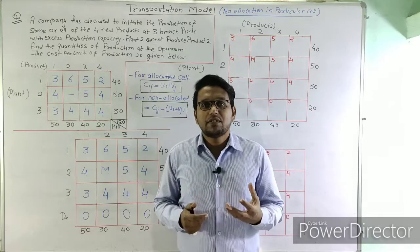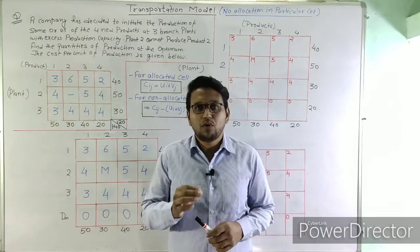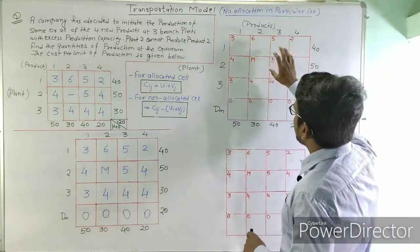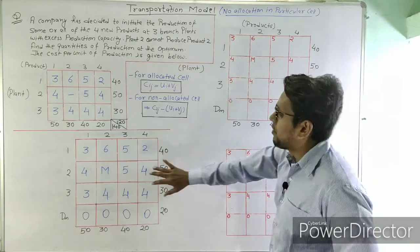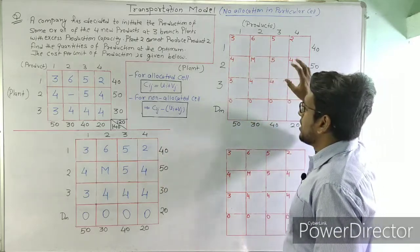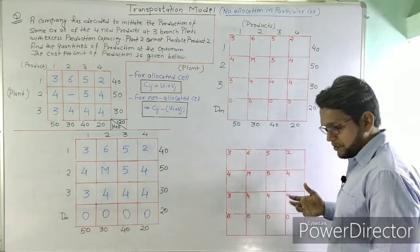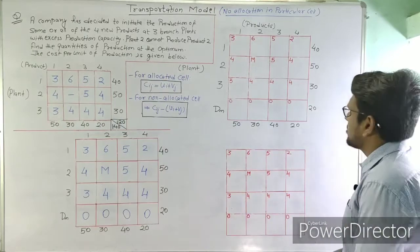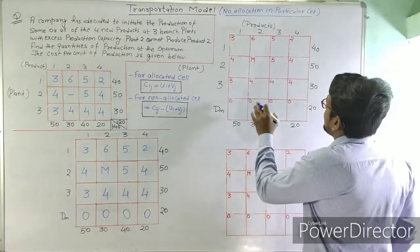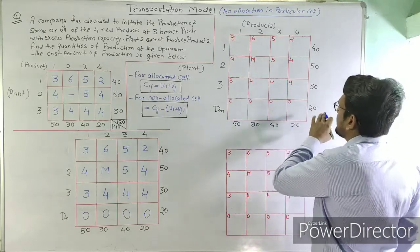Now that the problem is in balanced form, we will solve for the basic feasible solution using Vogel's approximation method. Let us start solving using this cost matrix.